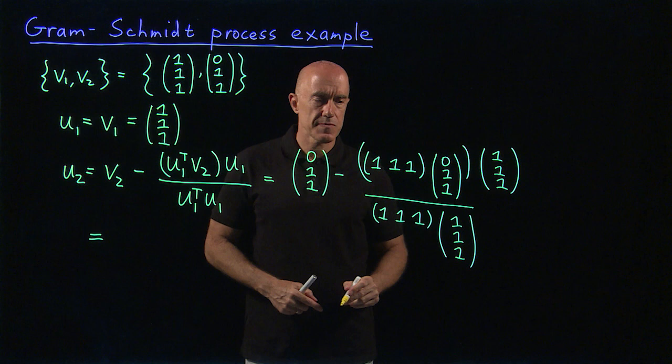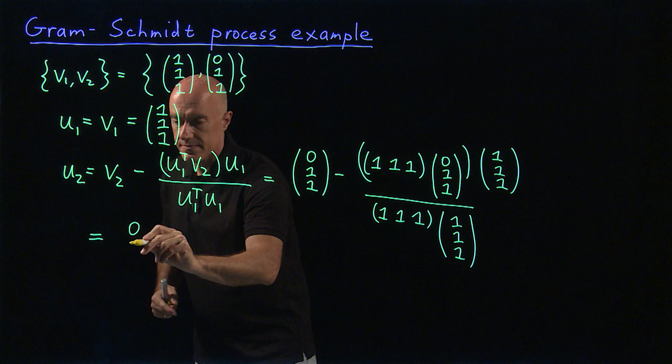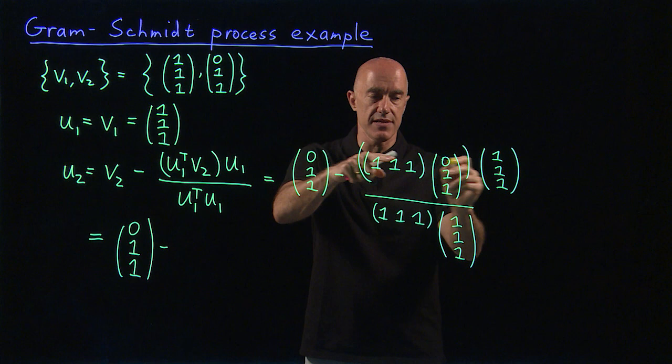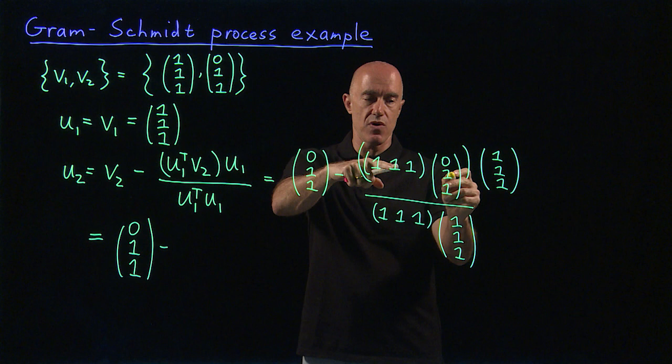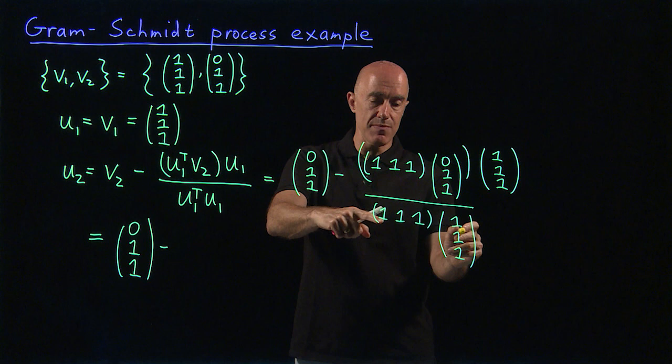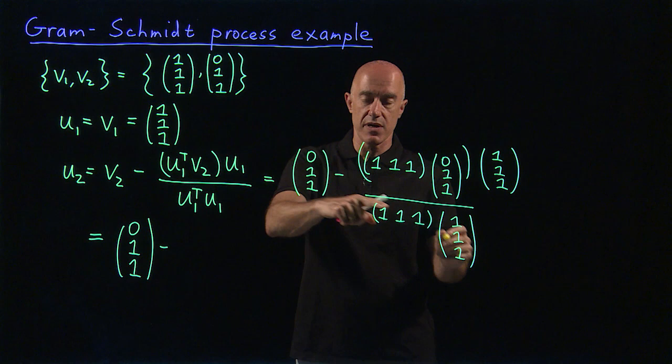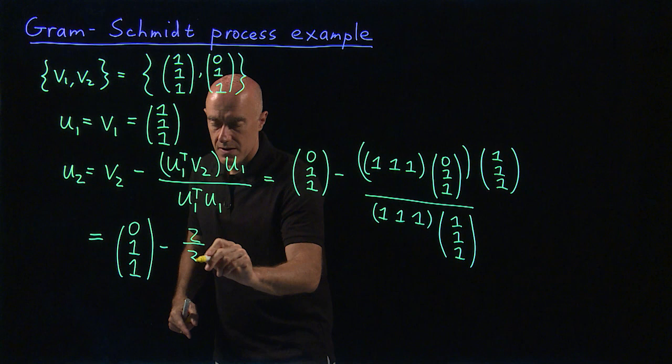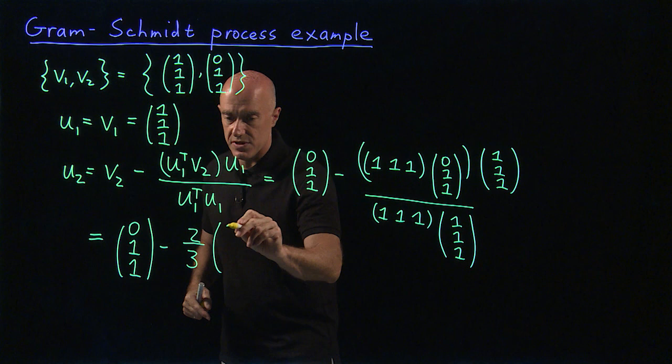We can do this. So this is (0,1,1). And then we're subtracting. This is a number divided by a number. This is 1 times 0 plus 1 times 1 plus 1 times 1, so this is the number 2. This in the denominator is the number 3: 1 times 1 plus 1 times 1 plus 1 times 1. So this is minus 2/3 times the vector U1, which is (1,1,1).